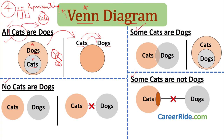For the word 'no': 'No cats are dogs' means they are not at all related. Draw two circles completely separated from each other, not touching or coinciding. An alternate way to draw this is to write 'cats' and 'dogs' and mark a line between them with an X, meaning cats and dogs are not related — they are separate entities. Moving on to the word 'some': 'Some cats are dogs' means some of the cat community are dogs — so we overlap the two circles.